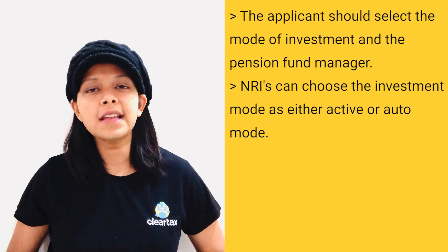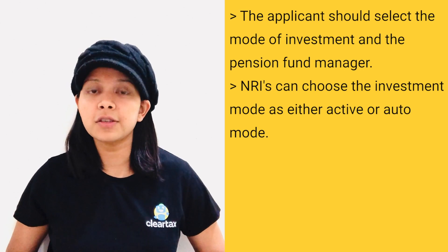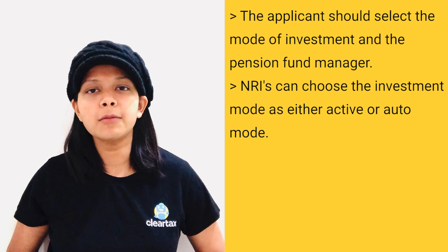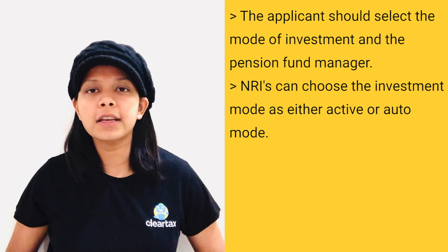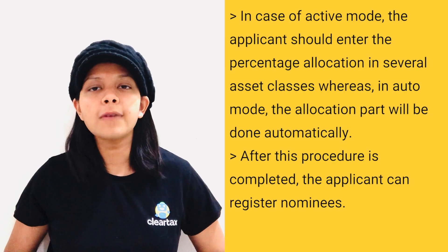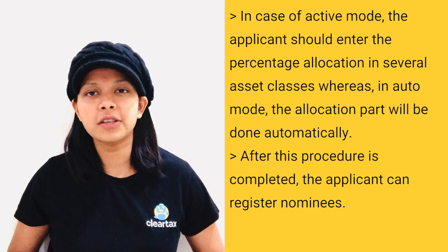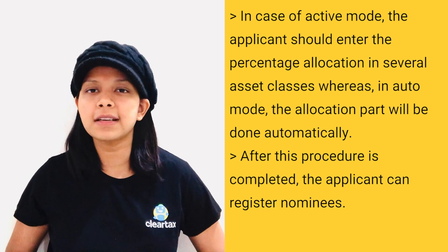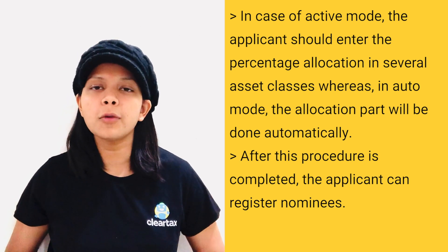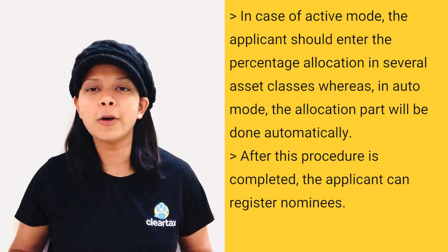The applicant should select the mode of investment and the pension fund manager. NRIs can choose the investment mode as either active or auto mode. In active mode, the applicant should enter the percentage allocation across several asset classes, whereas in auto mode, the allocation will be done automatically.